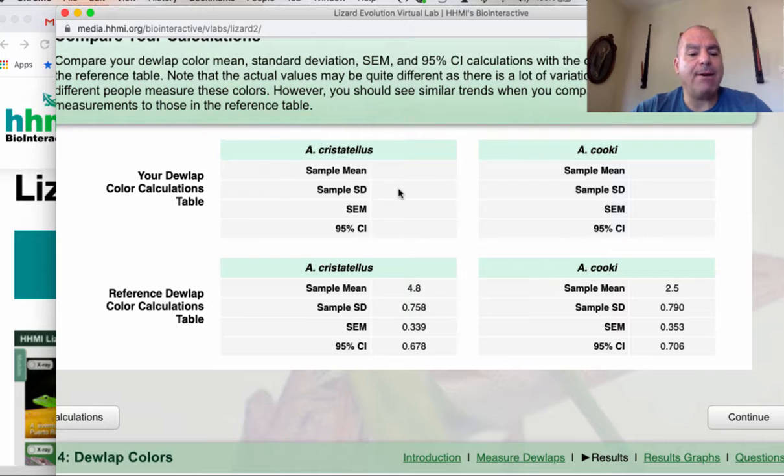And then it gives you a comparison table. Up top is where you would have entered your information. And then down below is the real data that the scientists did in doing the same exact thing that you're going to do.